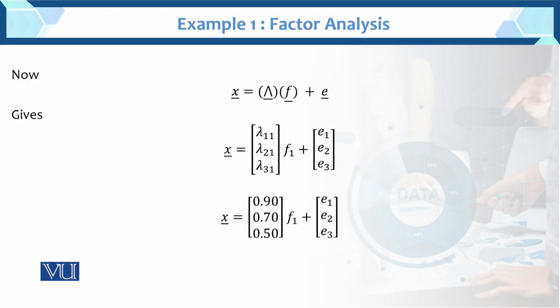With psi and lambda determined, we put them into the factor model. The model with one factor solution gives: z1 = lambda_11*F1 + e1, z2 = lambda_21*F1 + e2, z3 = lambda_31*F1 + e3. After substituting the values: z1 = 0.9*F1 + e1, z2 = 0.7*F1 + e2, z3 = 0.5*F1 + e3.